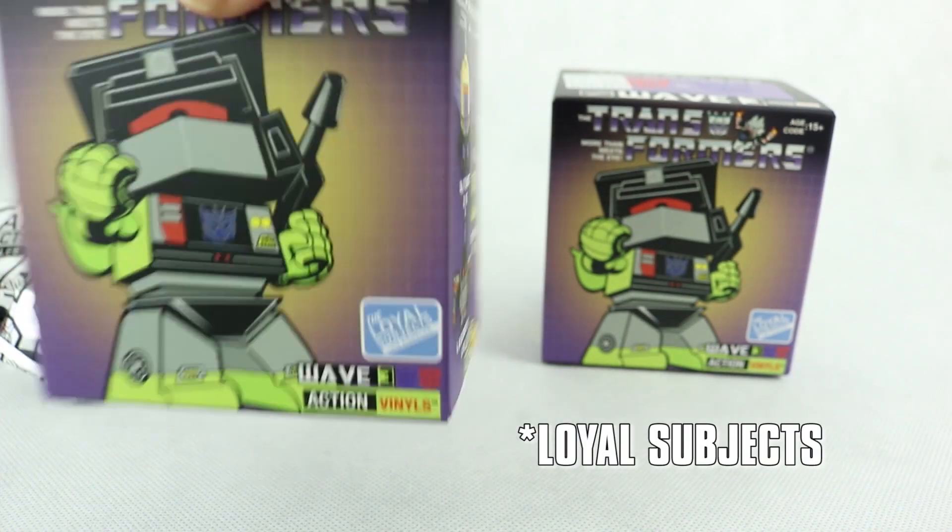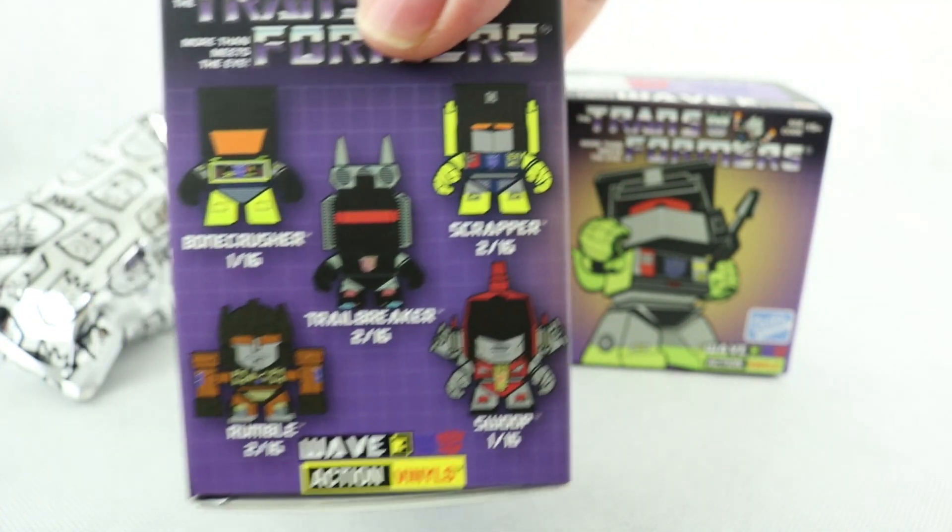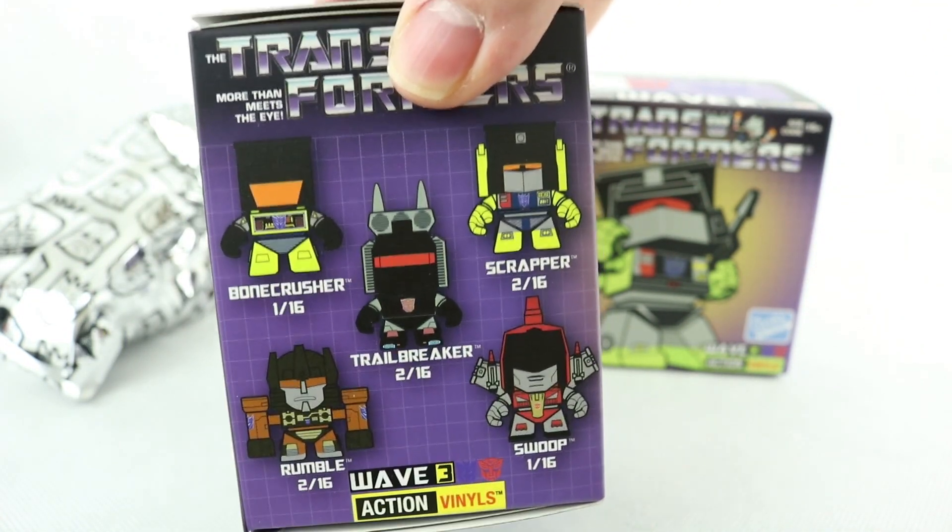My camera's not great. Oh there we go, Loyal Subjects is in focus now. You can see on the side all the different characters like Bonecrusher, Trailbreaker, Scrapper, Rumble, Swoop.